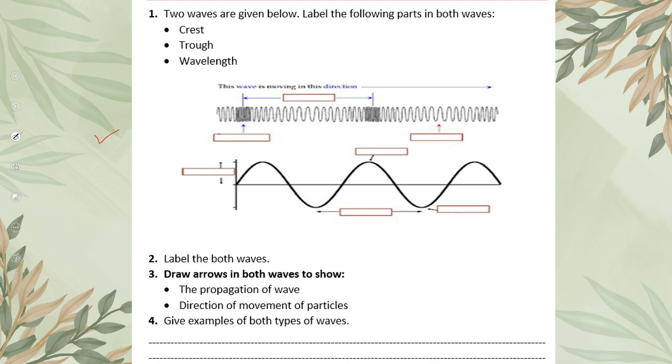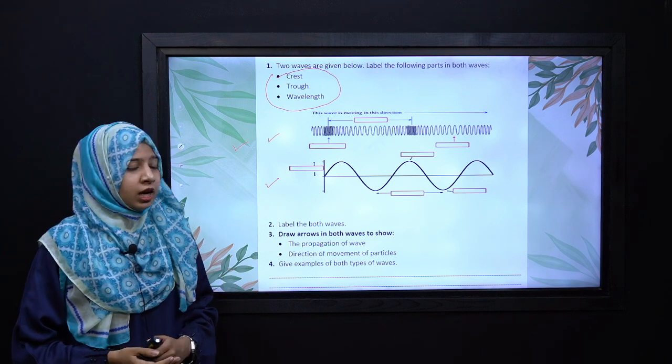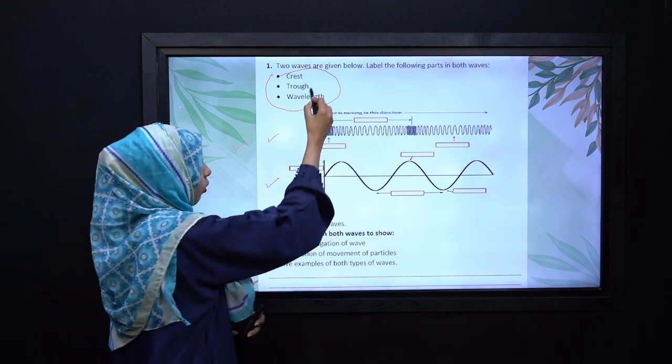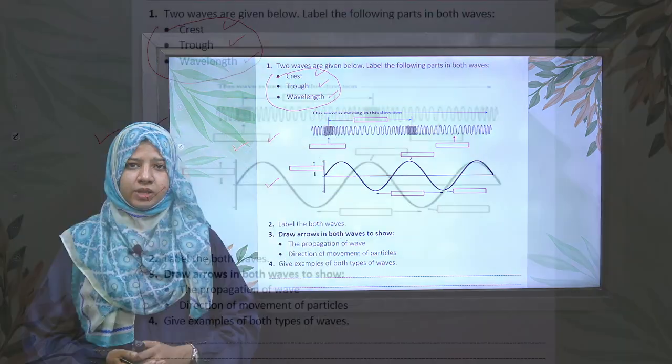In order to solve this worksheet, you have to label the following parts in the given wave. Here you can see two waves. The first one is a transverse wave while the second one is a longitudinal wave. So quickly pause your video and label these three components in both waves.